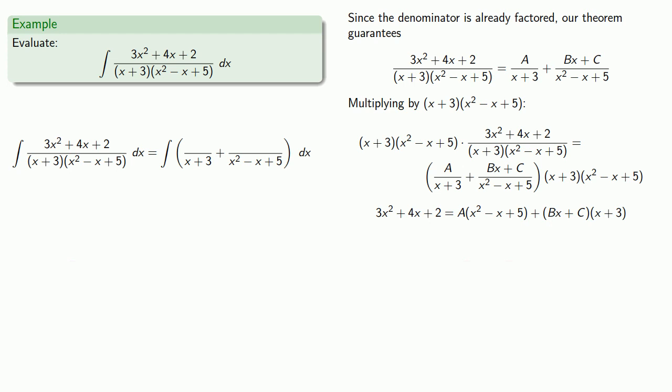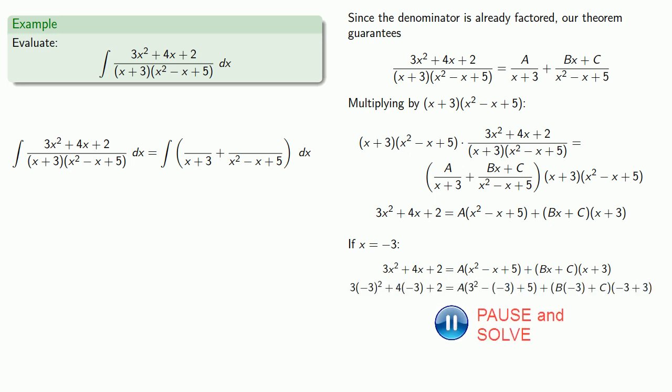So let's make sure it's true for x equals -3. If x equals -3, solving this equation, then we find that A must be equal to 1.